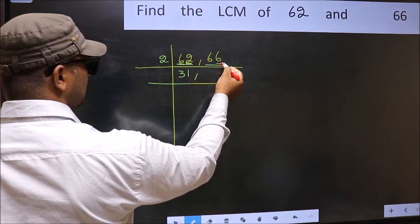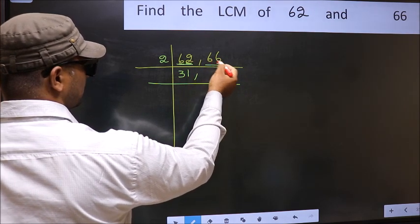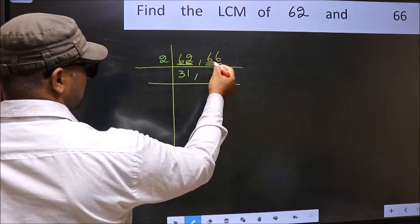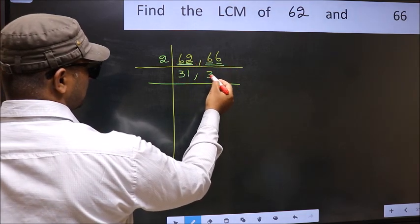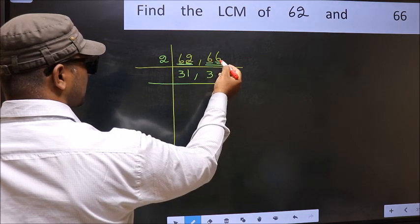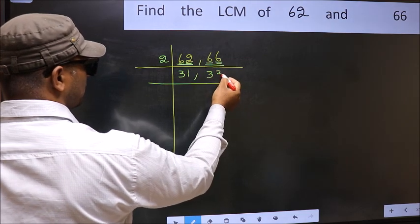Now, the other number, last digit 6. So, this is divisible by 2. First number, 6. When do we get 6 in 2 table? 2, 3, 6. The other number, 6. When do we get 6 in 2 table? 2, 3, 6.